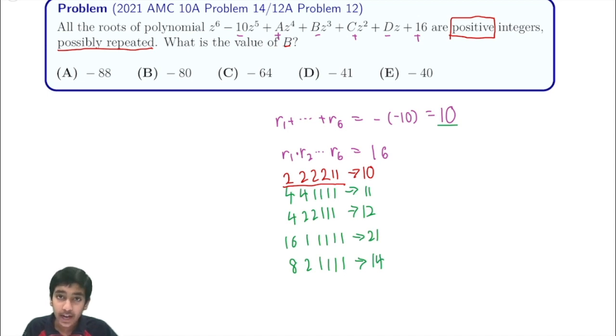Now, what do we have to find? We have to find B. What is B? B is the sum of all products of 3 roots. So B is equal to like R1, R2, R3, plus R1, R2, R4, etc. So how do we find what this is?